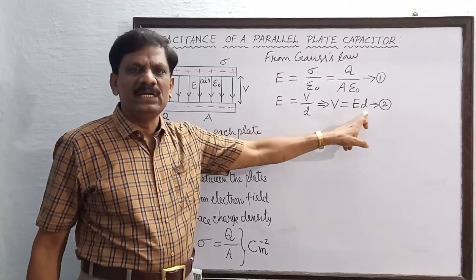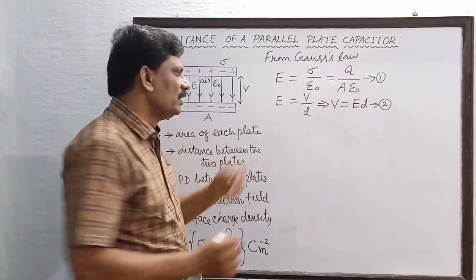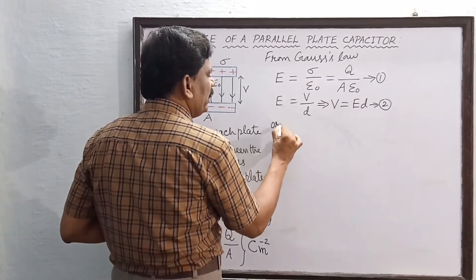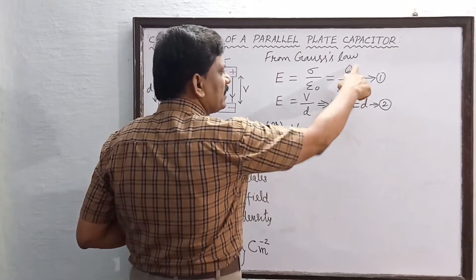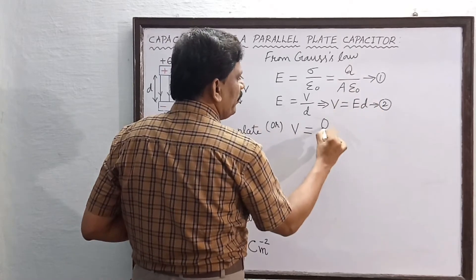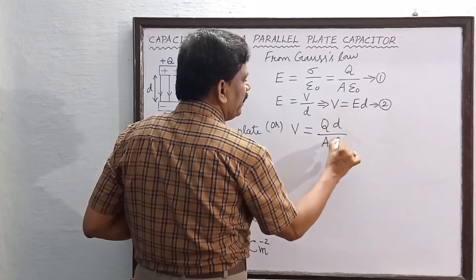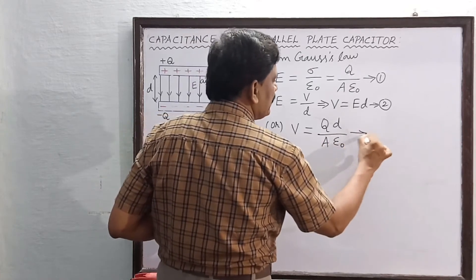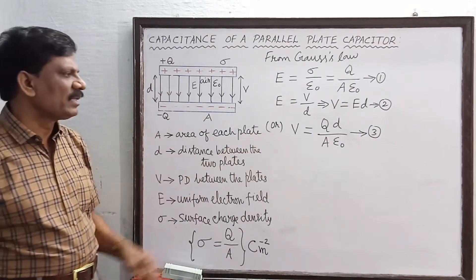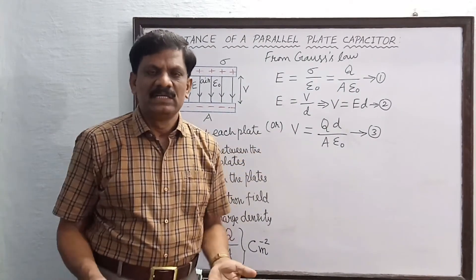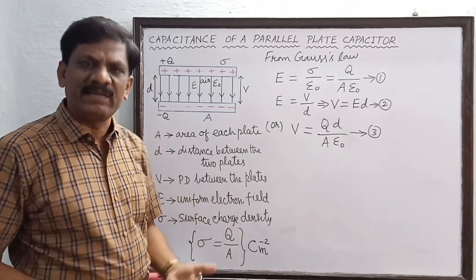The potential difference V is equal to E·d. Substituting equation 1 into equation 2, V = qd/(Aε₀). This is equation 3 — we now have the expression for the potential difference.